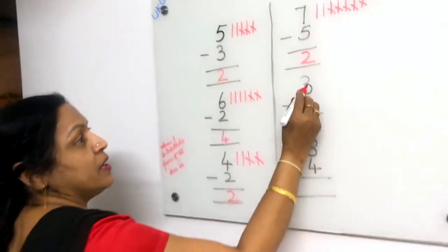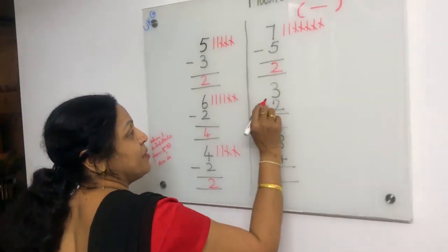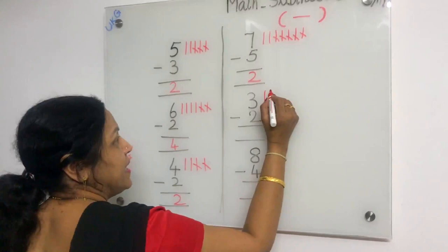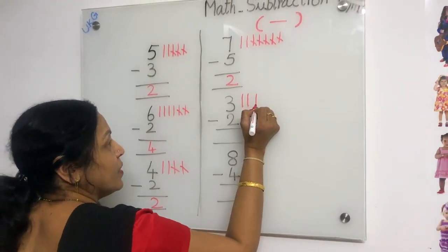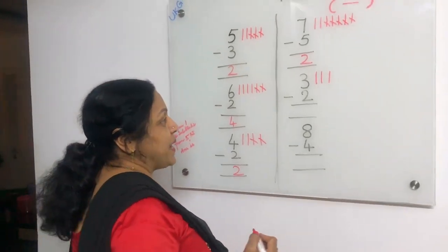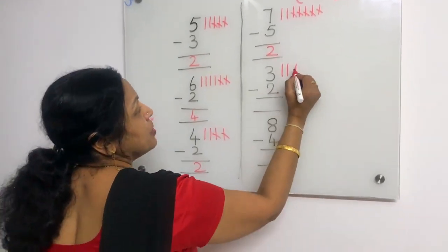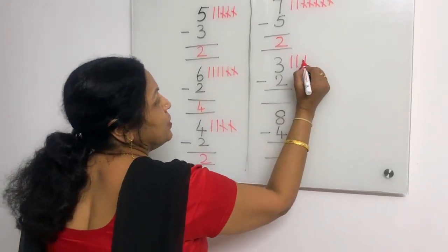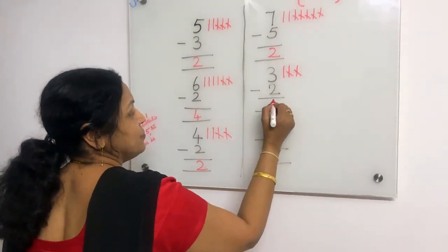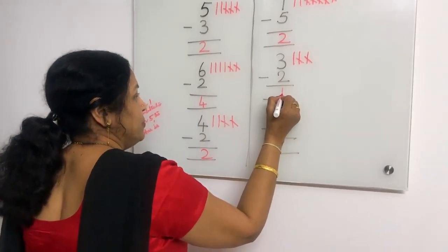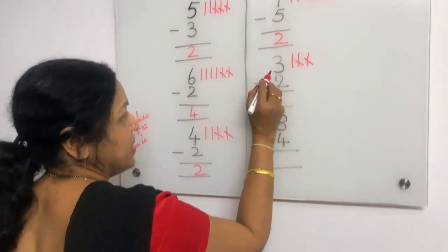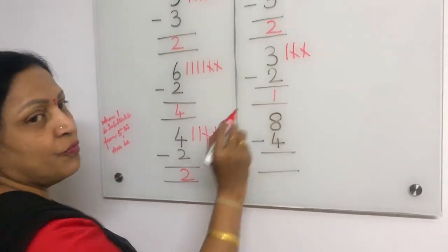Now here how many lines — what is this number? Three. We put three lines. In these three lines, we subtract two — we cut two lines: one, two. Answer is one. When two is subtracted from three, the answer is one.